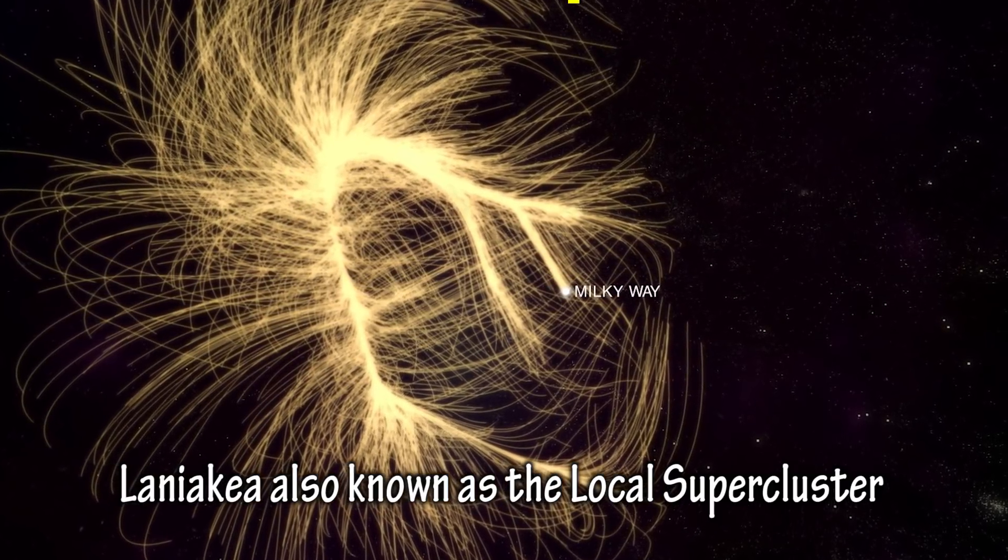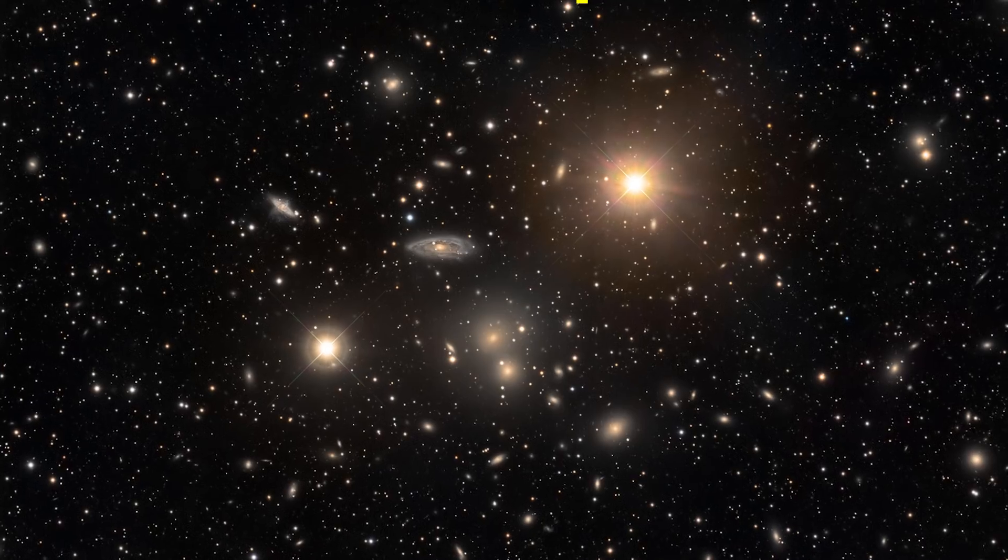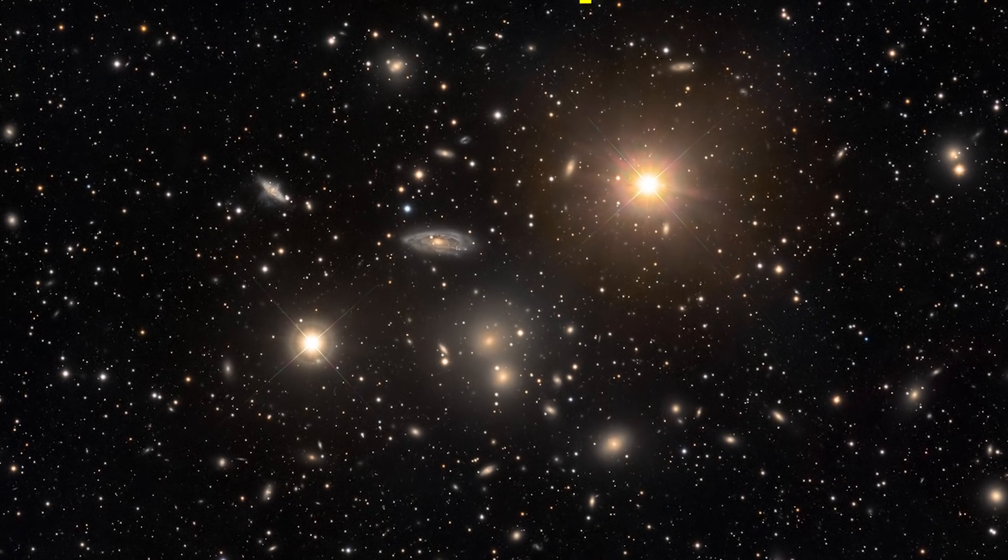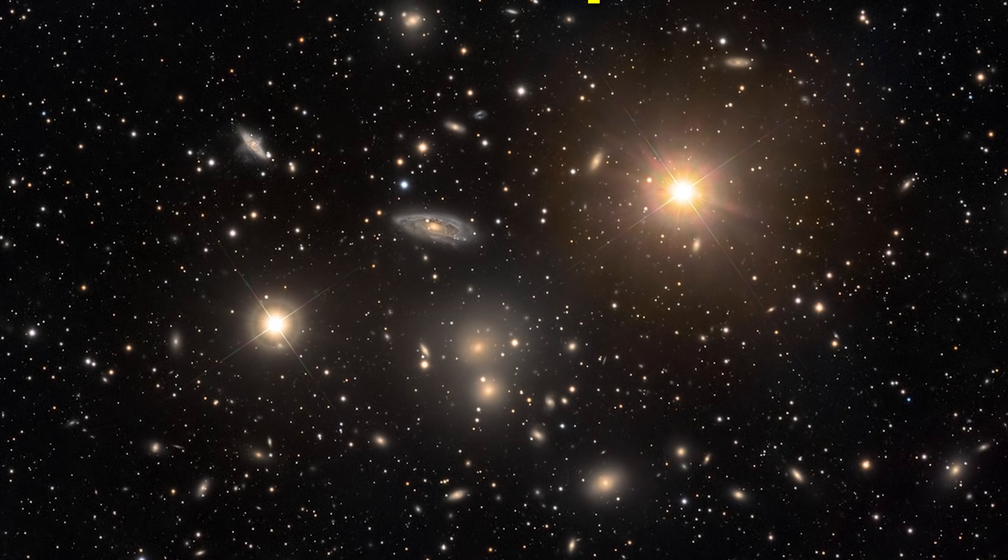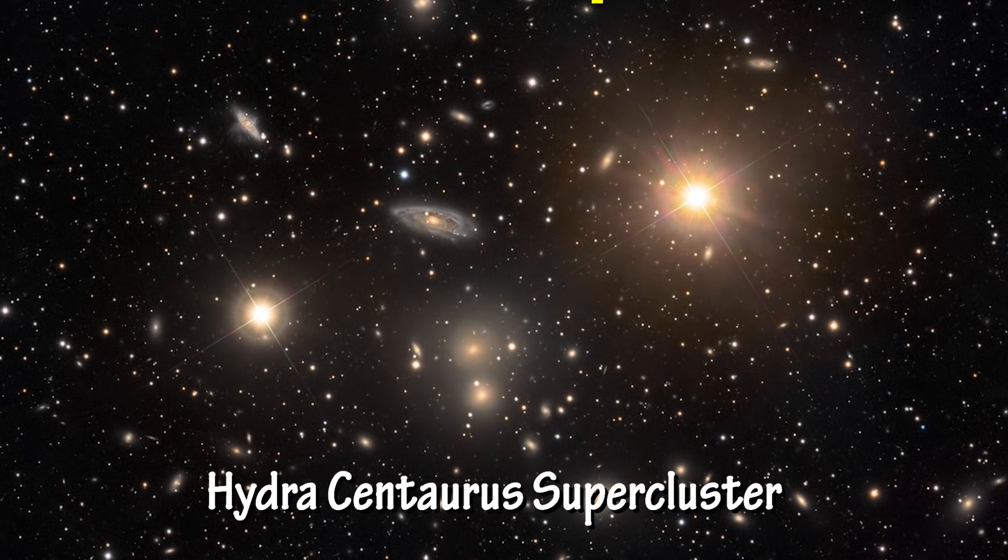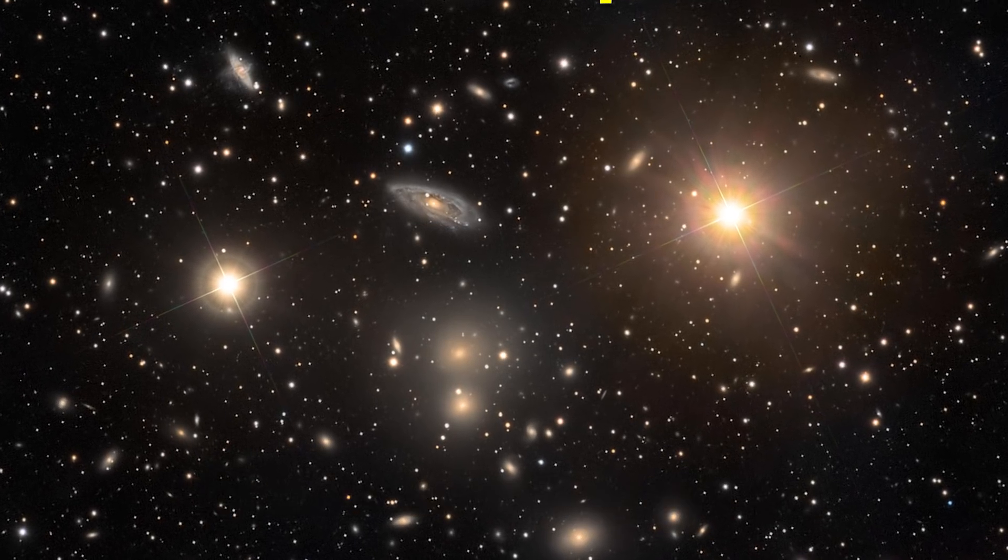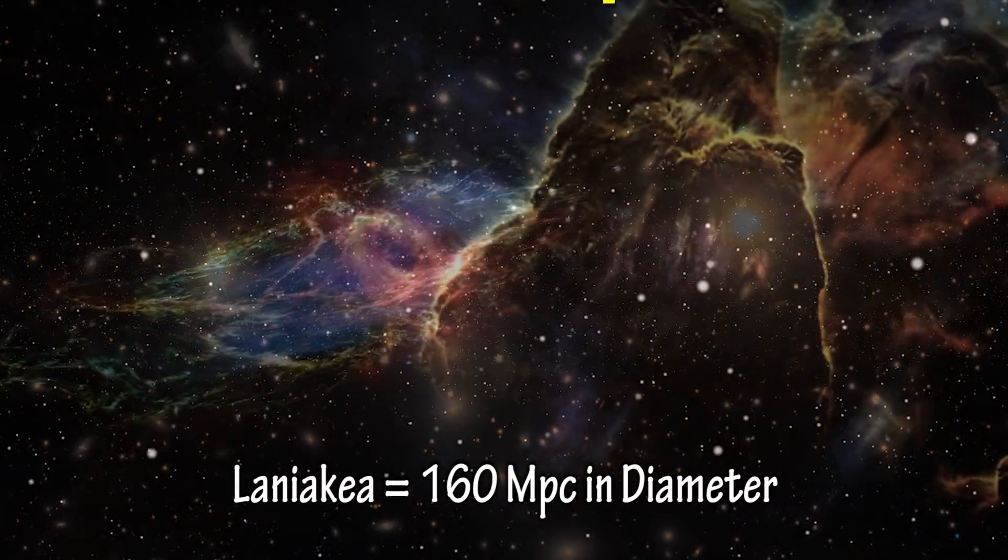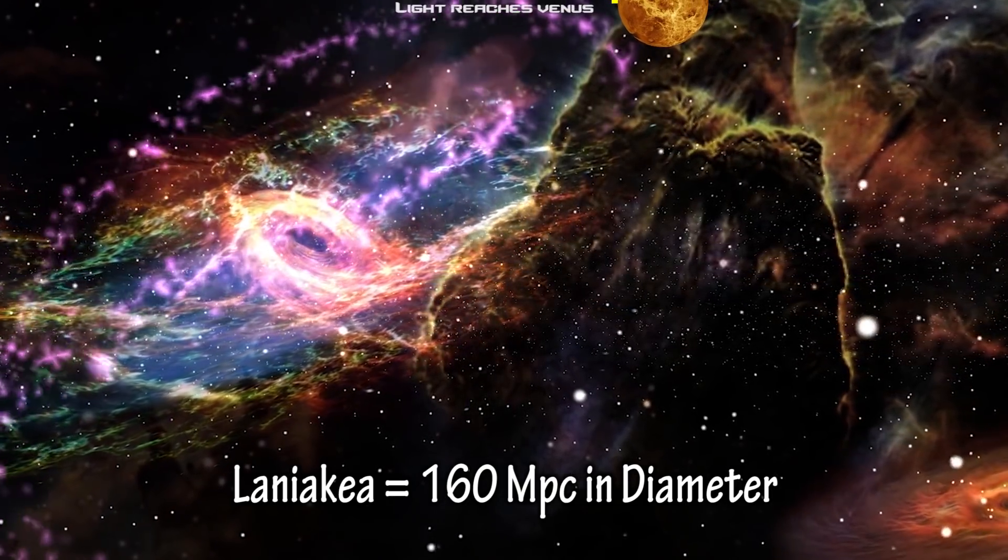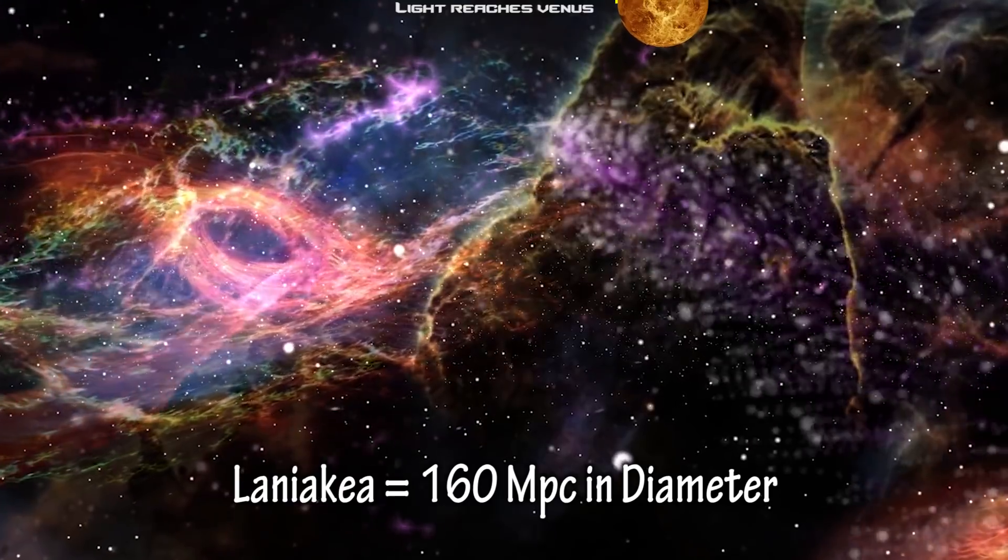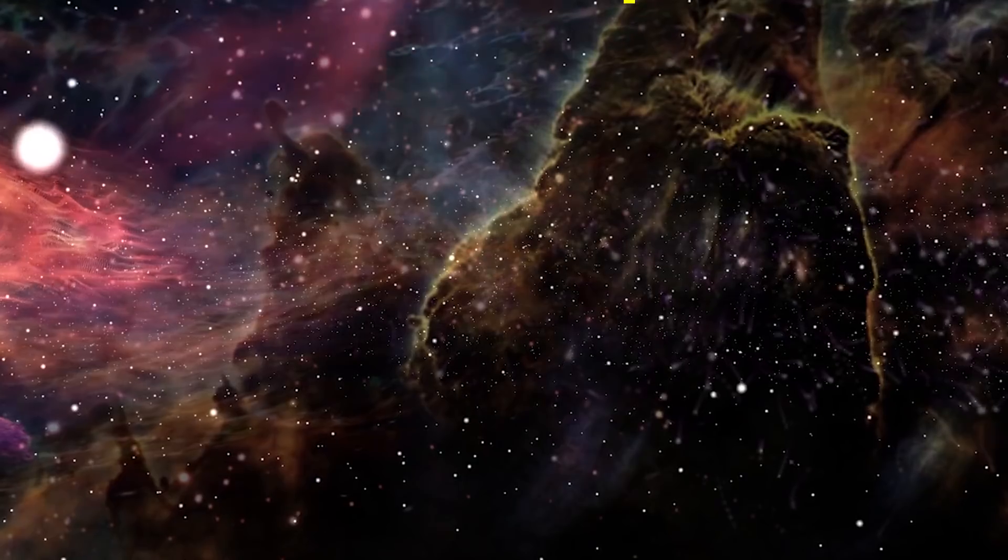The Laniakea supercluster was defined in September 2014. It appends the Virgo supercluster to include the Hydrocentaurus supercluster, Parvo Indus supercluster and the Southern supercluster. It contains over 100,000 galaxies alone, compared to the 54 that the Local Group has. It spans 520 million light years across, compared to the Local Group at only 10 million, or the Milky Way at 100,000 light years.